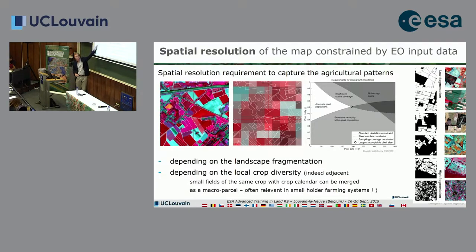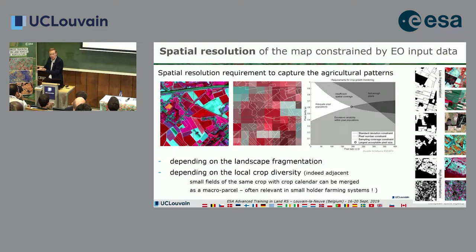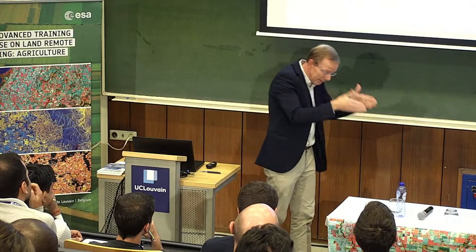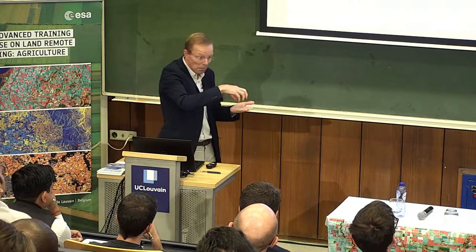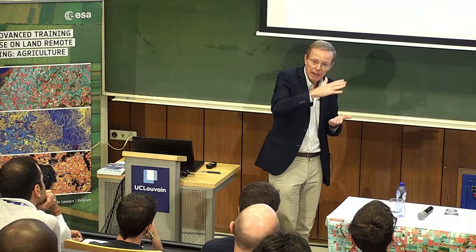This is related to fragmentation. But fortunately, in many small-holder farming systems, the fields are very small but not very diverse. You can consider the local crop diversity to figure out what is your minimum pixel size. If you have a small field of rice, but it's rice all over, you can map the rice as a whole. You don't need the pixel to fit within the parcel—you have a macro structure which is all the small parcels managed at the same time for the same crop.